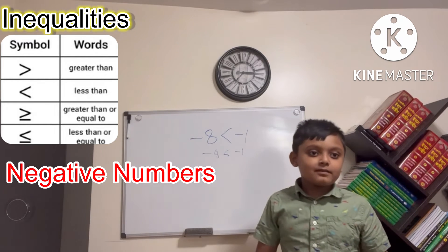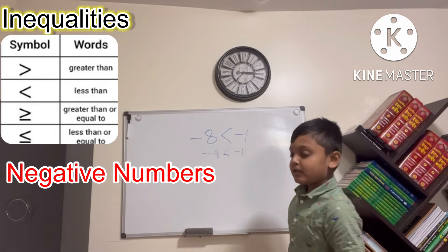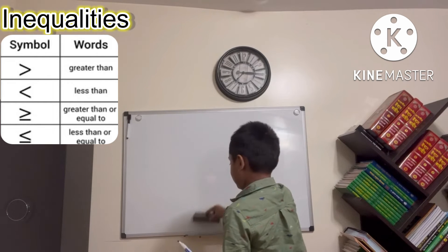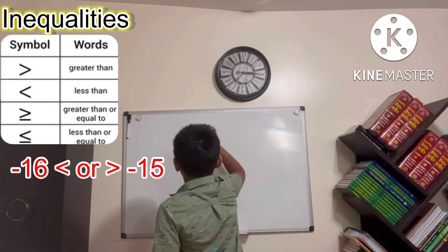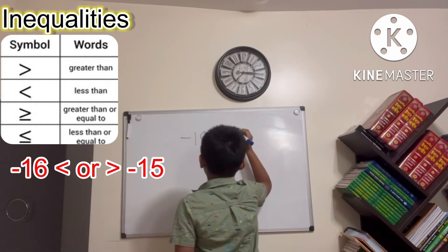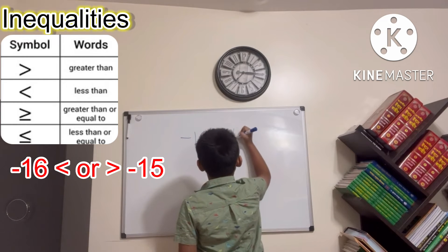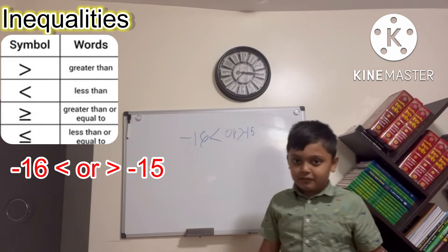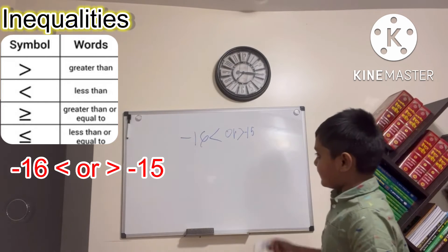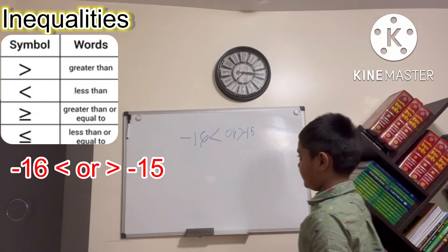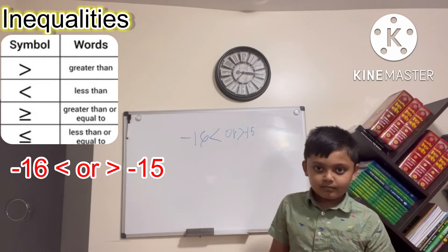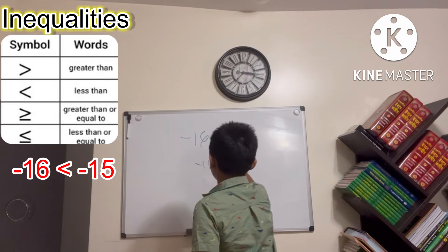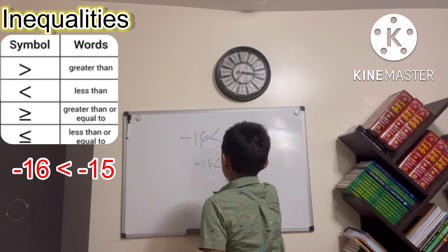Now let's do a problem using negative number inequalities. Is negative 16 less than or greater than negative 15? Choose one. If you said less than, you're definitely correct, because bigger negative numbers are less than smaller negative numbers.